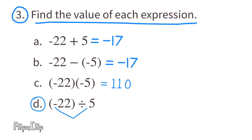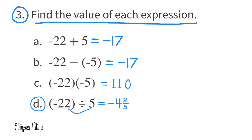Part d: negative 22 divided by 5. This is a negative divided by a positive, so the answer is negative. 22 divided by 5: 20 divided by 5 is 4, plus 2 divided by 5 is two-fifths. So the value is negative 4 and two-fifths, or negative 4.4.